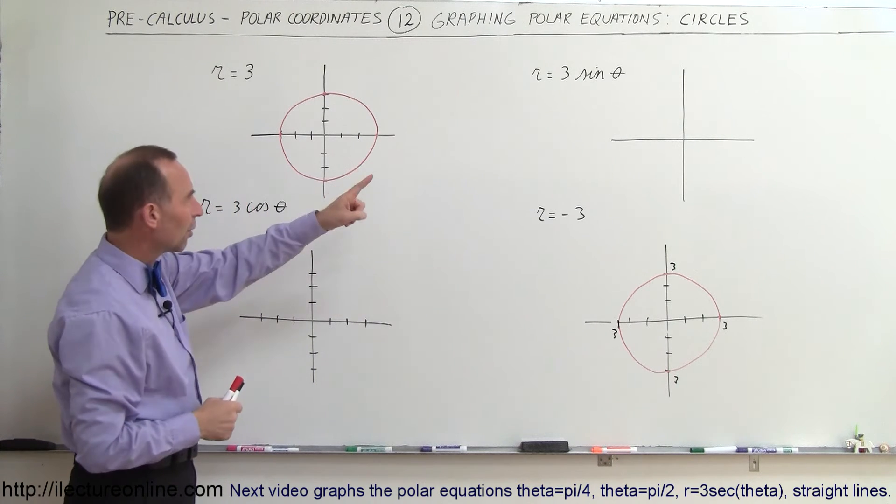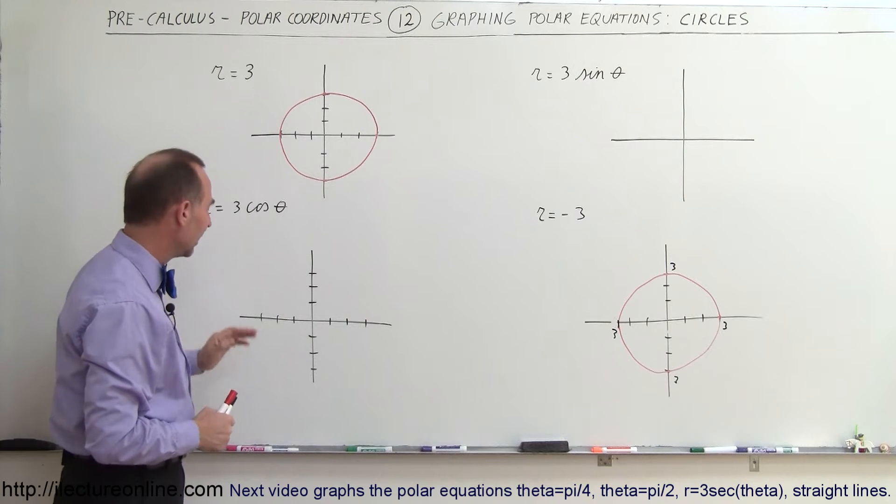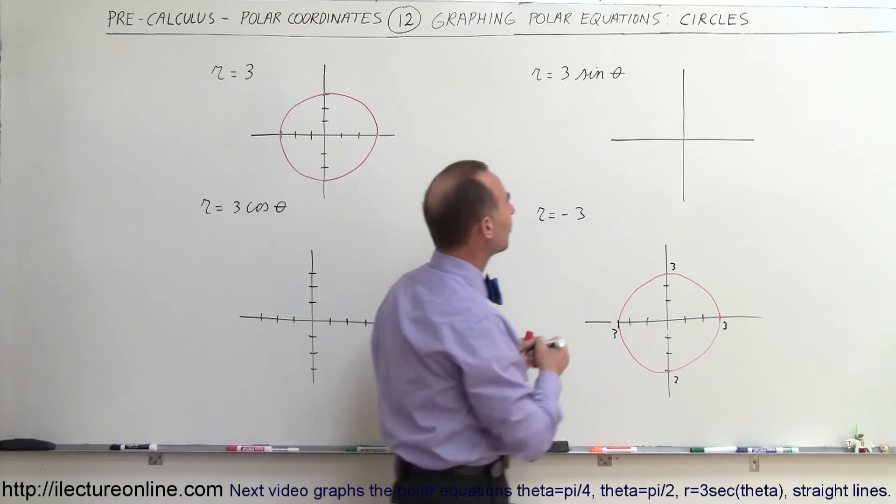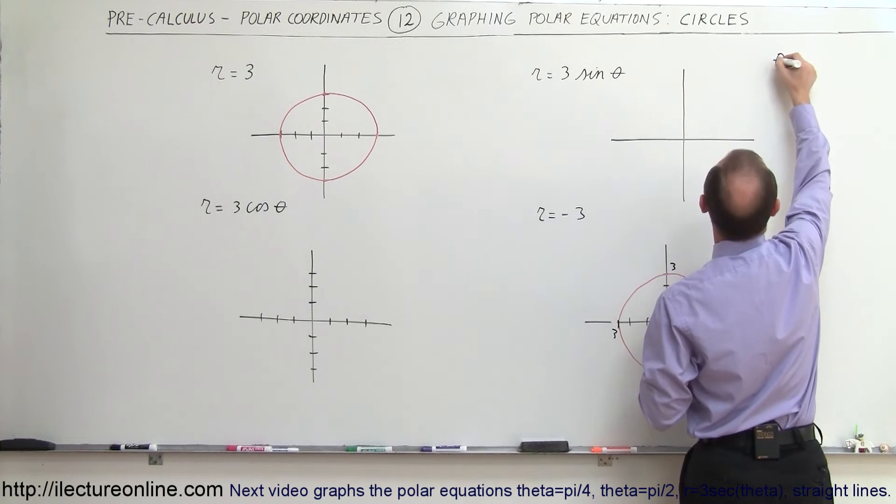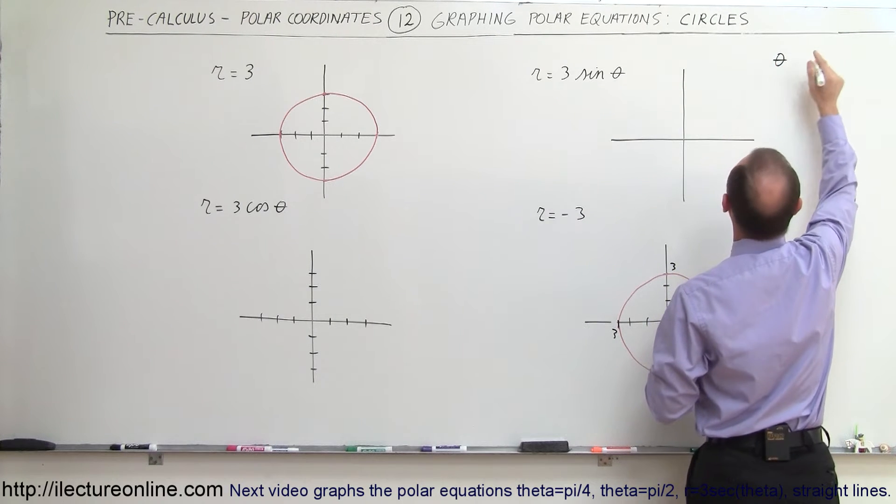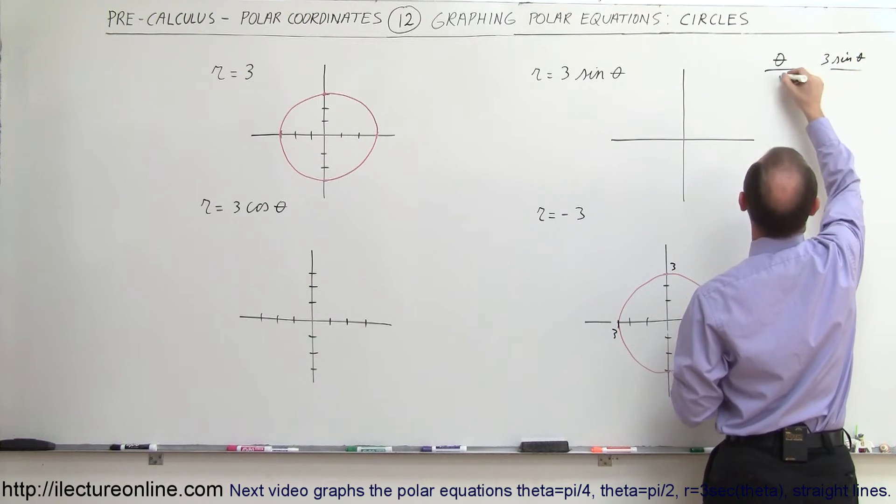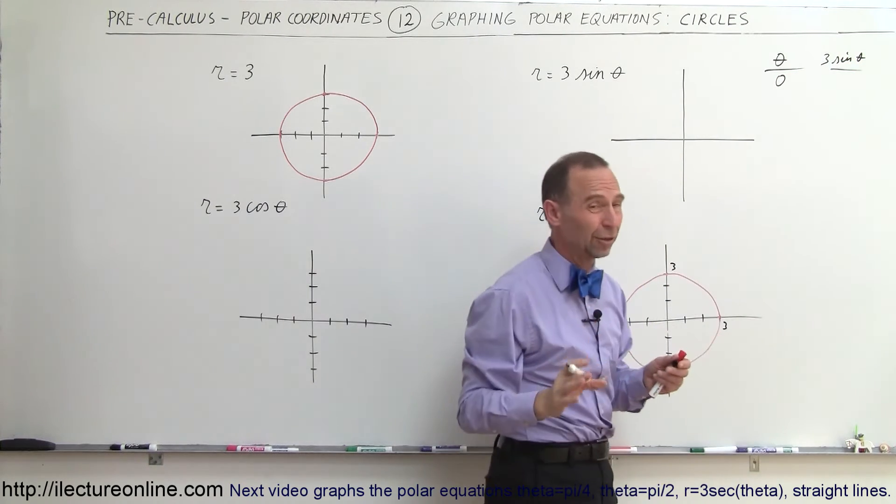Next let's try r equals 3 times the sine of theta, and r equals 3 times the cosine of theta. So what happens? Let's plug in a few values. If theta is equal to some value, what is 3 times the sine of theta? Well, let's try that. If theta is equal to 0, the sine of 0 is 0.